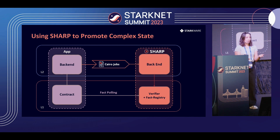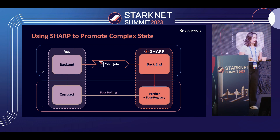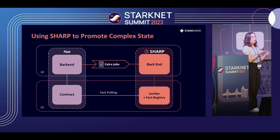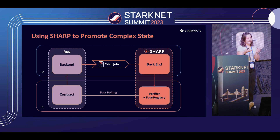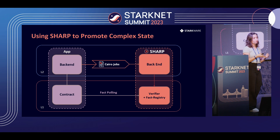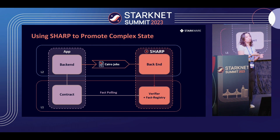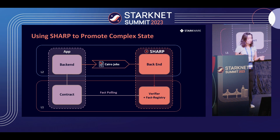Maybe some of you have Starknet on your mind. That's how Starknet works — instead of doing all Starknet transactions on-chain, the Starknet OS sends jobs that update the state of the system to Sharp. On-chain, it just advances its state based on the fact that Sharp proved those state updates are correct.